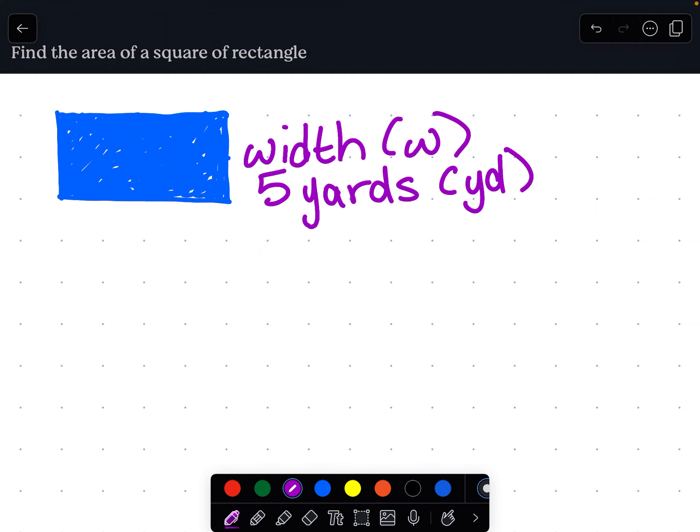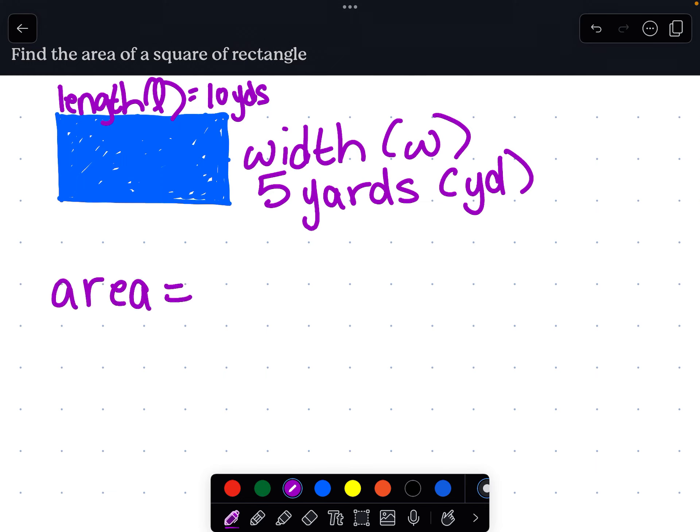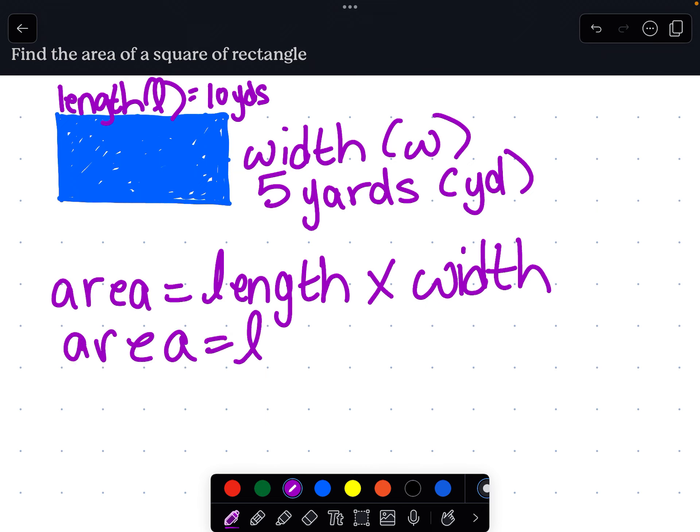And let's pretend that, and here we have up here the length, which is the longer side. The abbreviation is just an L. And let's pretend the length is 10 yards. Now, the straightforward formula for calculating the area is length times width. Let me write that out. Area equals length times width. And another way that people write this is area equals LW. And when you have two letters next to each other, it means that they are multiplied together. So length times width.